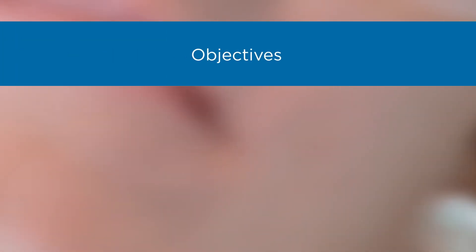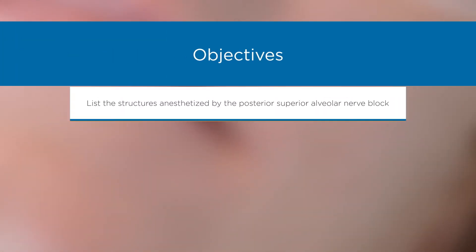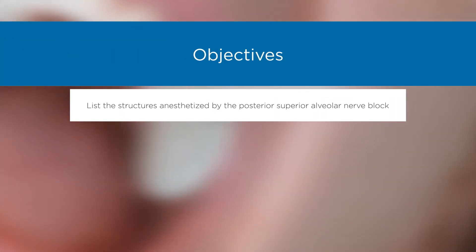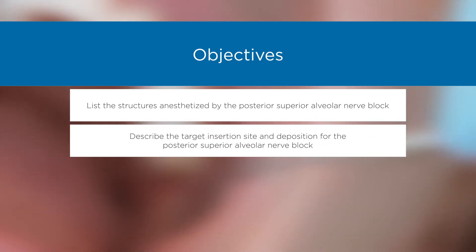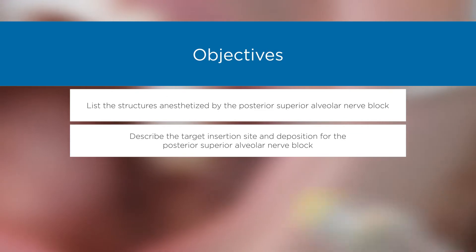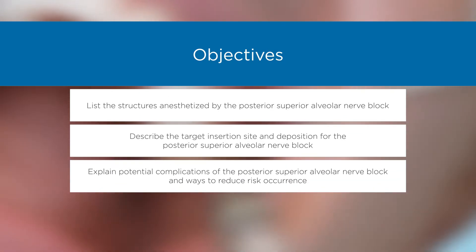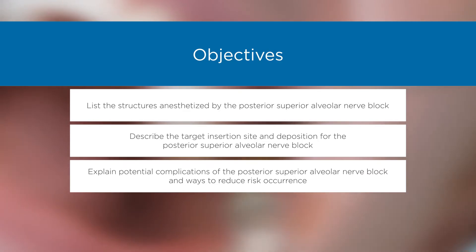Objectives: List the structures anesthetized by the posterior superior alveolar nerve block. Describe the target insertion site and deposition for the posterior superior alveolar nerve block. Explain potential complications of the posterior superior alveolar nerve block and ways to reduce risk of occurrence.